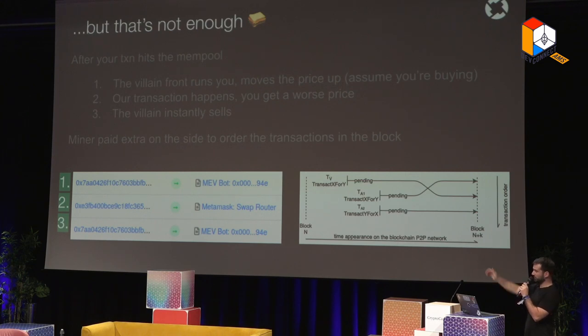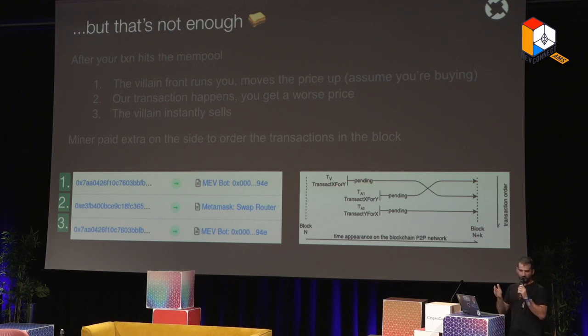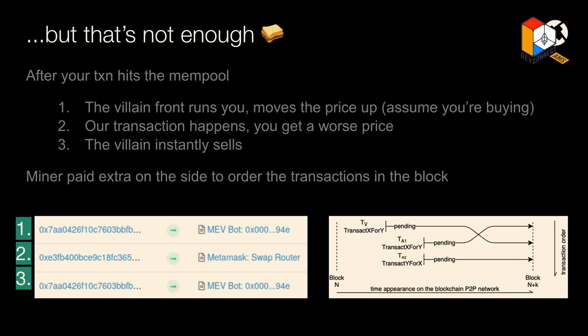Sandwich attacks typically happen in a series of three actions — you're the one in the middle. The MEV attacker front-runs you and moves the price up if you're buying; your transaction then happens at your slippage tolerance worst acceptable price; then the attacker instantly sells and pockets the difference. The attacker also typically bids using Flashbots to reorder the transactions, and the miner also gets a cut.